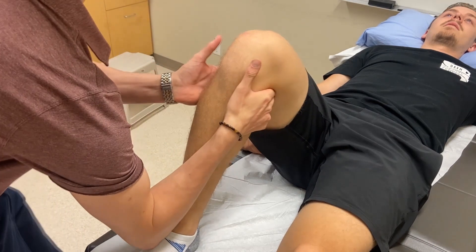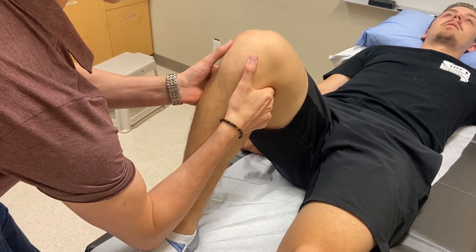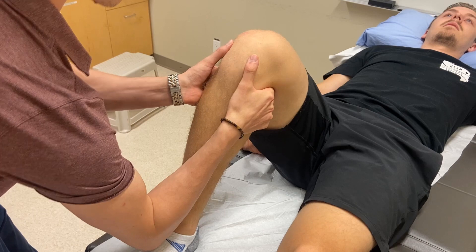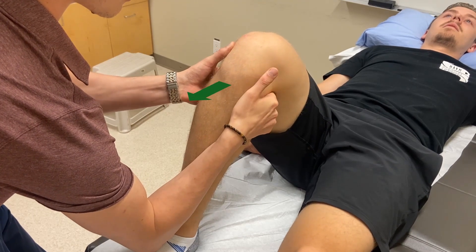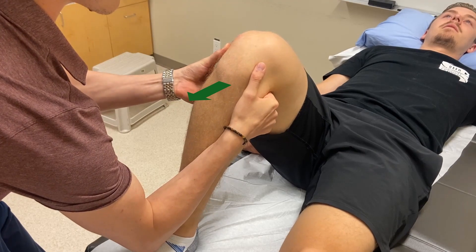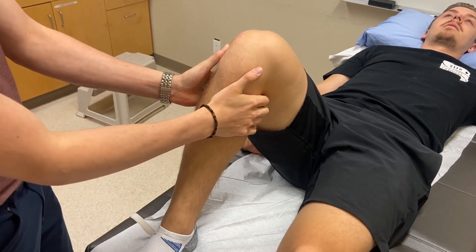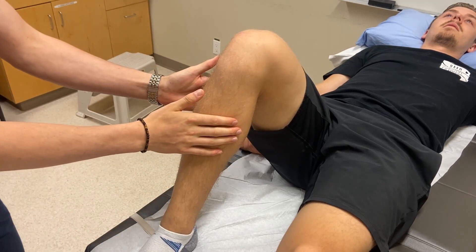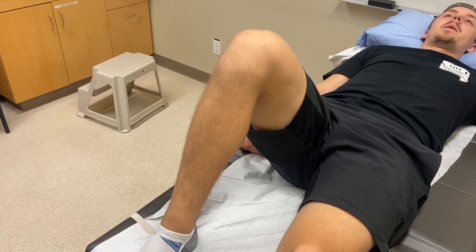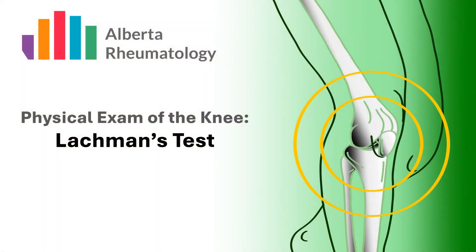Use one forearm to firmly stabilize the patient's lower leg and foot just proximal to their ankle. Note that typically the examiner would sit on the patient's foot to stabilize; however, this is not advised in rheumatology patients, as they may have tender joints in their foot and ankle. Once in position, use your hands to attempt to pull the patient's tibia forward. A positive test will yield a tibia that translates forward to a great extent with a lack of a firm end feel. Ensure to always compare to the patient's other knee.